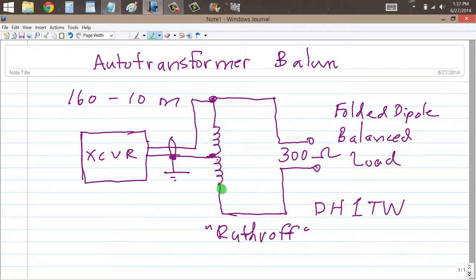The turns ratio of this coil here, input to output turns ratio T, is equal to 1 to 2. That is to say, this part of the coil has just as many turns as that part, so the whole coil which sees the load has twice as many turns as this half of the coil which sees the radio.